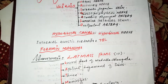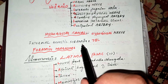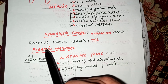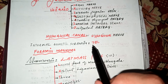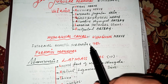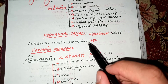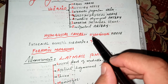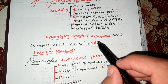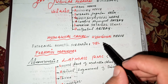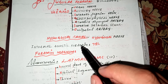Another foramina present in the posterior cranial fossa is the internal acoustic (carotid) meatus. We have the mnemonic '781' for the structures passing through it: 7 for the facial nerve, 8 for the vestibulocochlear nerve, and L — which looks like 1 — for the labyrinthine artery, which also passes through the internal acoustic meatus.